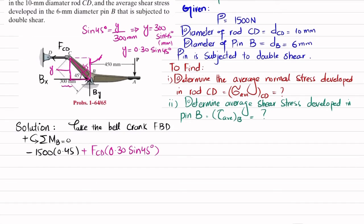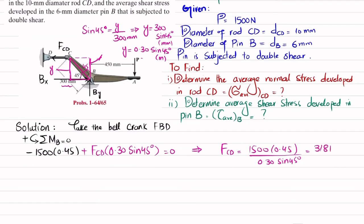So the moment equation becomes: −1500 × 0.45 + FCD × 0.30 × sin(45°) = 0. Solving for FCD: FCD = (1500 × 0.45) / (0.30 × sin(45°)) = 3181.98 N.